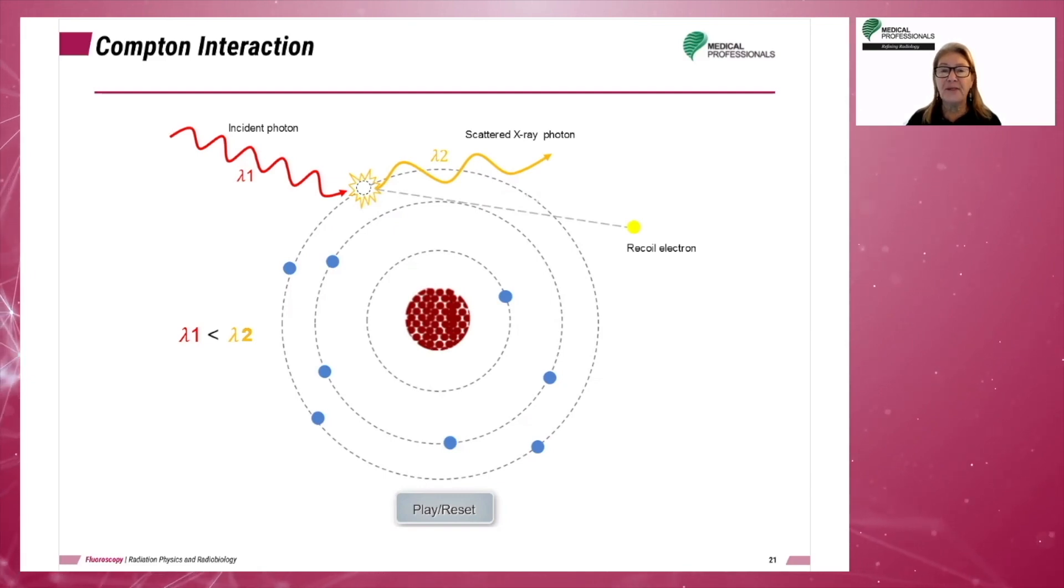This means the atom has been ionized because the outer shell electron is ejected from the atom in the form of a recoil electron. The x-ray photon changes direction and has a lower energy level than the incoming or incident photon. Again, this scattered photon can go on to interact with a different atom.